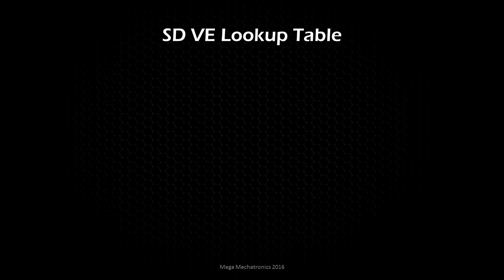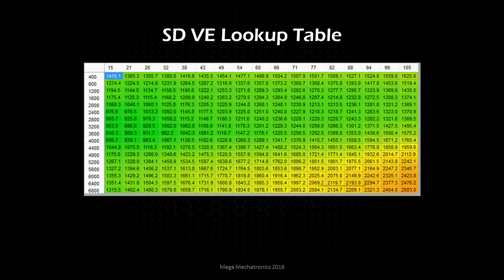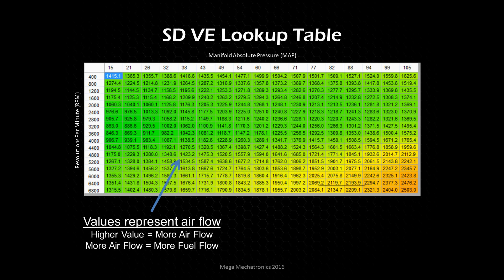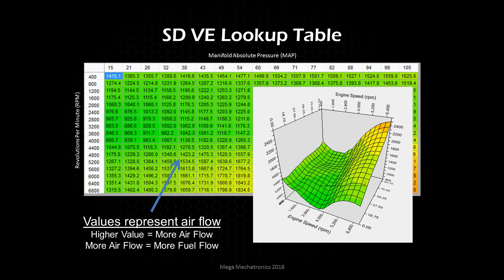Looking at the speed density main calibration table, we see two scales: the vertical axis is RPM, and along the top we have manifold absolute pressure ranging from 15 kPa to 105 kPa — just above 101 kPa atmospheric pressure. The values in the cells represent airflow — higher value means more airflow. More airflow means more fuel, because the computer knows the target air-fuel ratio and proportionally increases fuel flow. Here's a three-dimensional representation where yellow and orange indicate wide open throttle conditions.